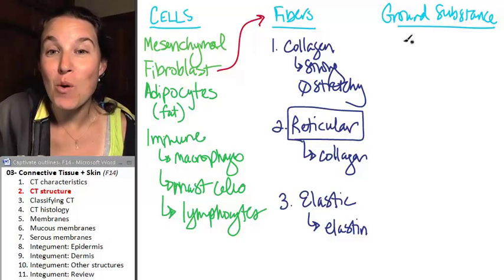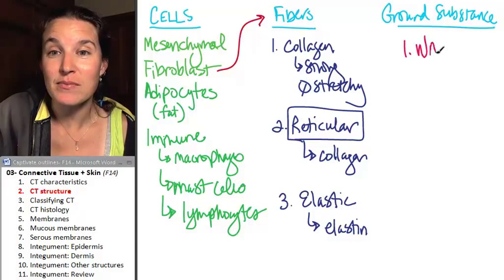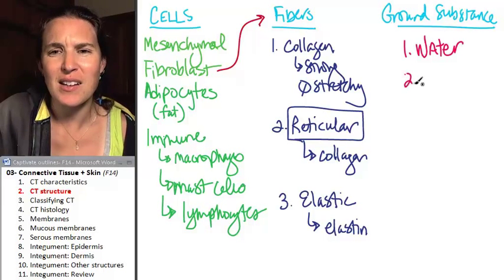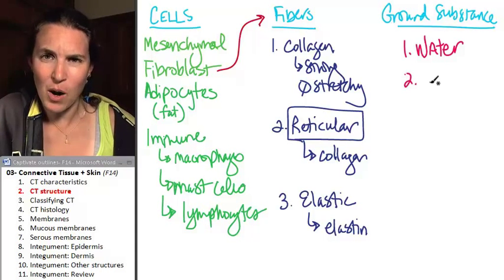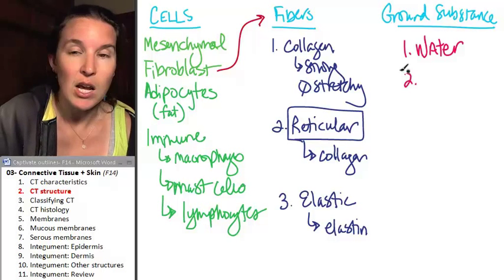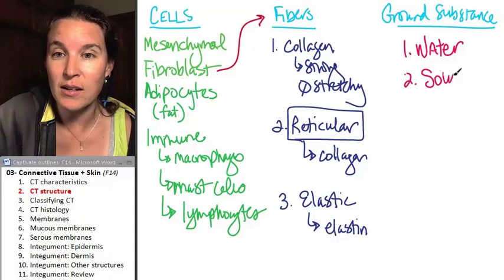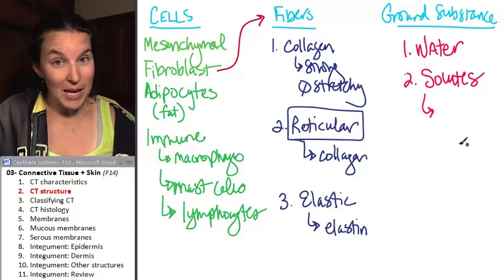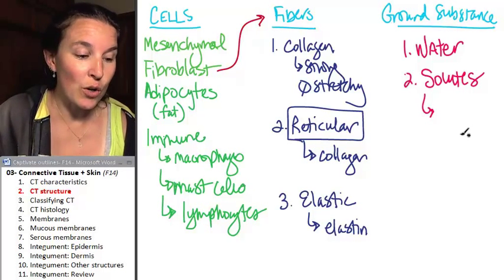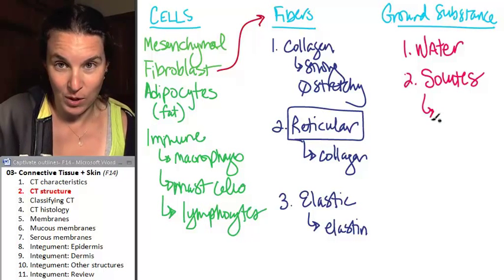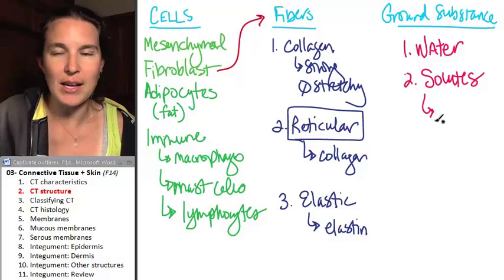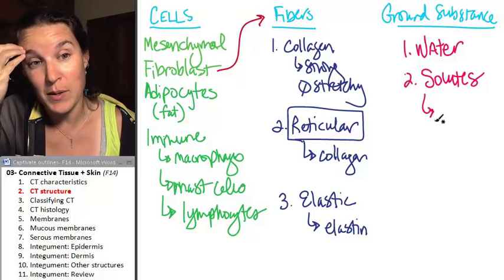Ground substance is mostly made of water. That's the broth. But is the broth like nothing but water? No. It has some stuff in it. So it has solutes in it. Flavoring. I'm going to give you some names of solutes and we're going to see why we care about these when we get to cartilage.